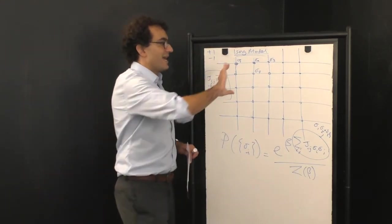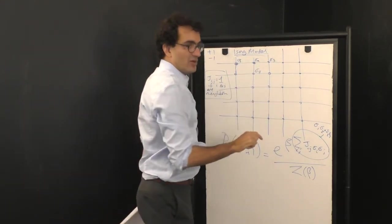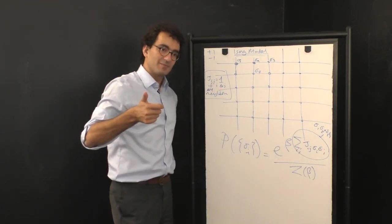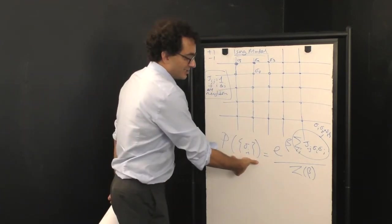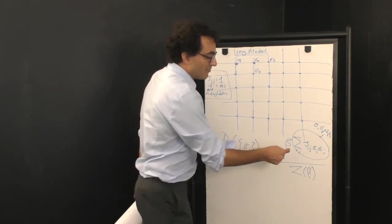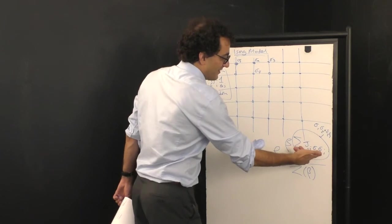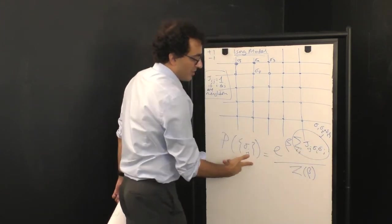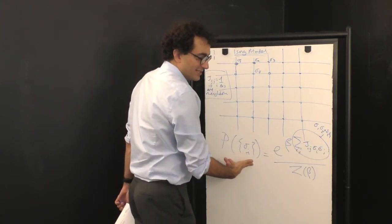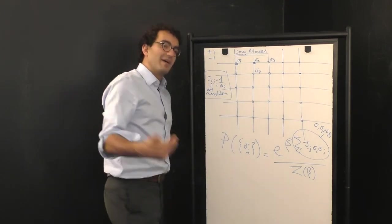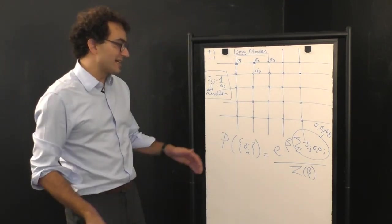What that means is that if you align more and more of these nodes, if you put them all into the same state, that configuration is more likely. It becomes even more likely if you increase beta. As beta gets larger and larger, the benefit to all being in the same state for the overall probability of that configuration gets larger. As beta gets smaller and smaller, it matters less and less.